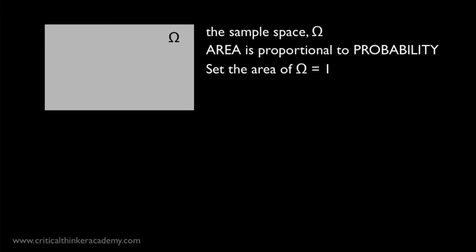We'll set the area of this sample space equal to 1. Now, when we do this, different events, different possible outcomes, can be represented by subsets of this area. And the probability of those events will be proportional to the area of the subsets.